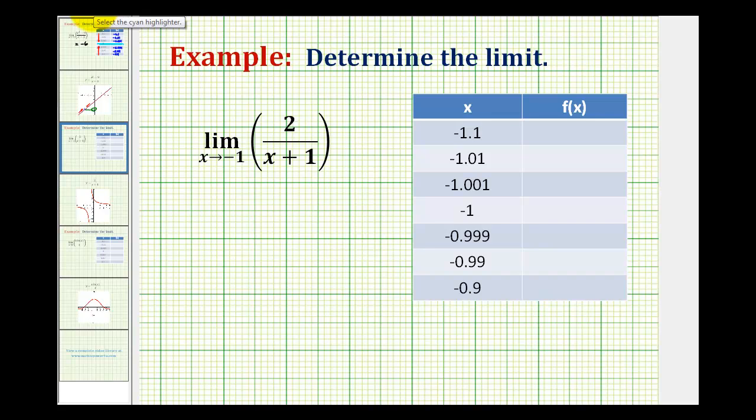So when we create our table, we're going to have x equals negative 1 in the middle, and then notice how we have 3 rows above and 3 rows below, where these 3 values approach negative 1 from the left.